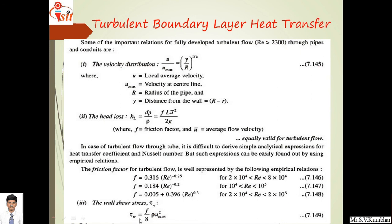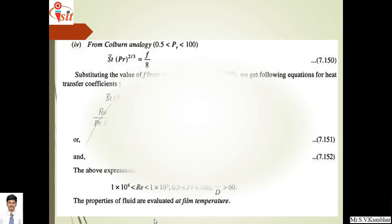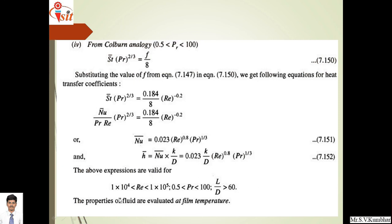The second important empirical relation: wall shear stress tau_w equals f upon 8 times rho U_max squared, where f is the friction factor found from the empirical relations above. Reynolds number is calculated to determine the applicable zone, where rho is density and U_max is maximum fluid velocity. From Colburn analogy, when Prandtl number is greater than 0.5 and less than 100, Stanton number times Prandtl number raised to 2/3 equals f upon 8.